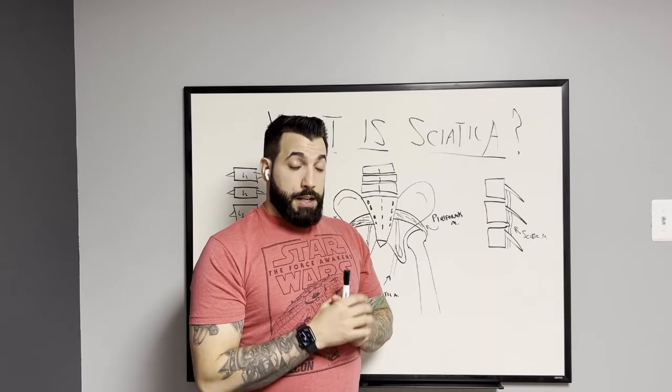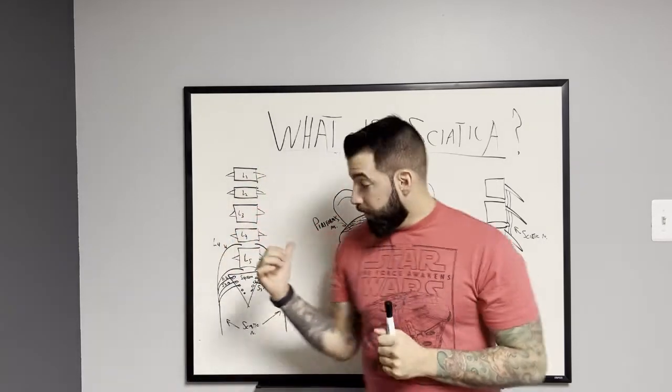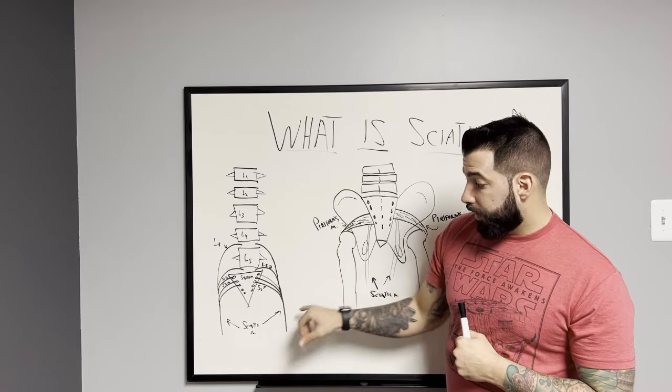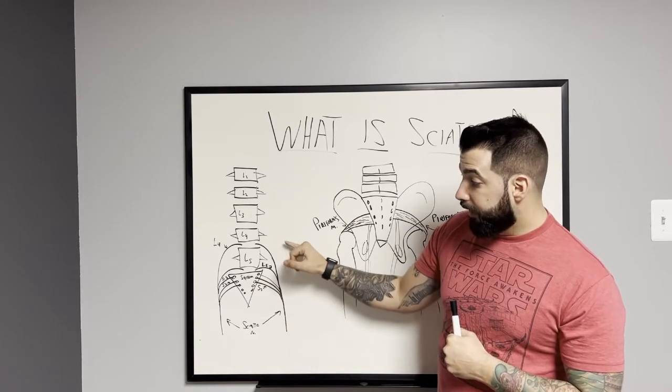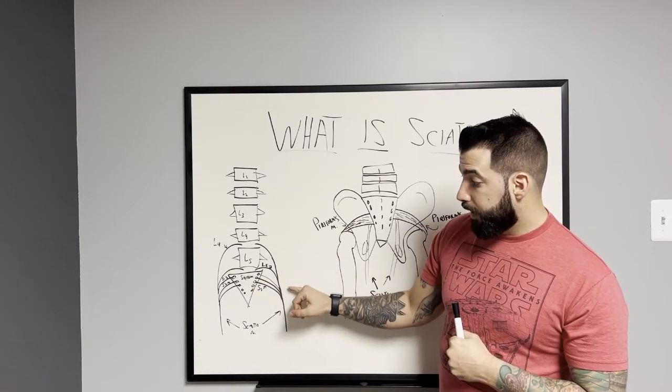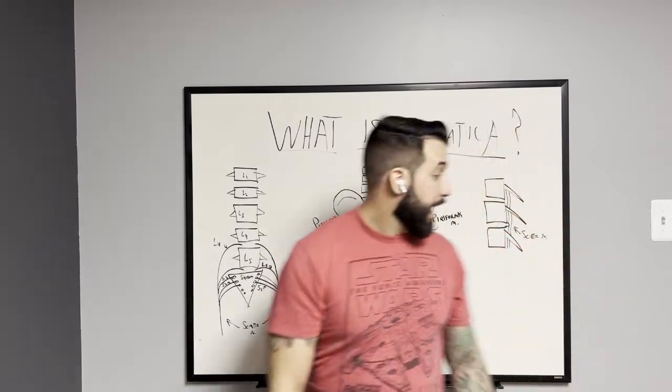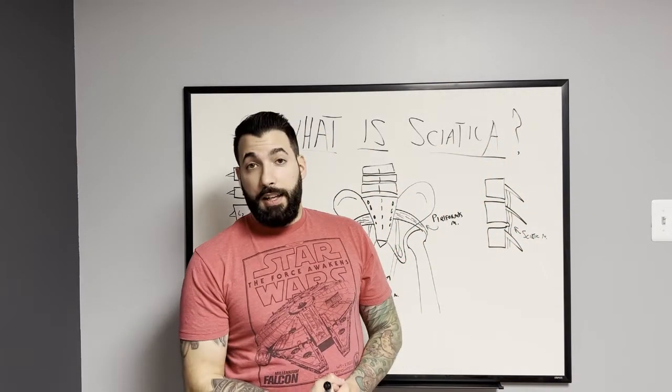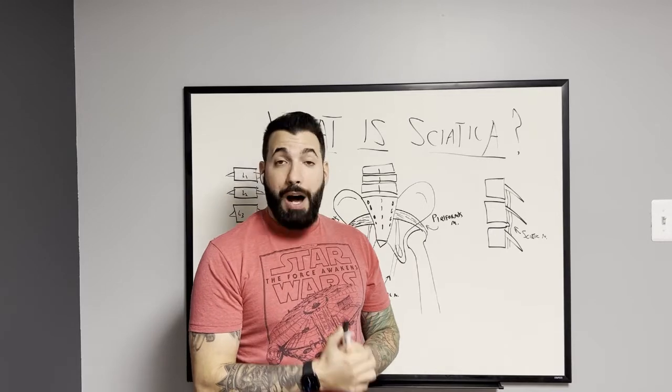Now, if you remember from our previous drawing, an explanation of what the sciatic nerve is made up of, which again is L4, L5, S1, S2, and S3, having sciatica in the lower back is not particularly possible.